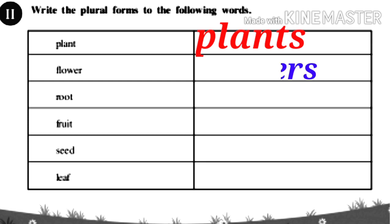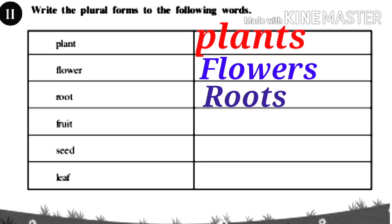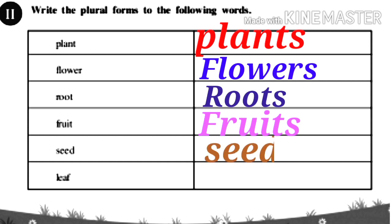Flower — flowers. Root — roots. Fruit — fruits. Seed — seeds. Leaf — leaves.